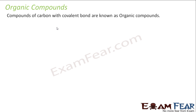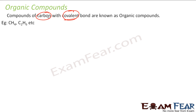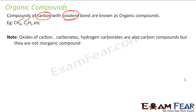What are organic compounds? Organic compounds are nothing but compounds of carbon with a covalent bond — it has to have a covalent bond. Examples: CH4, C2H6. Please note: oxides, carbonates, and hydrogen carbonates are carbon compounds but they are not organic compounds.